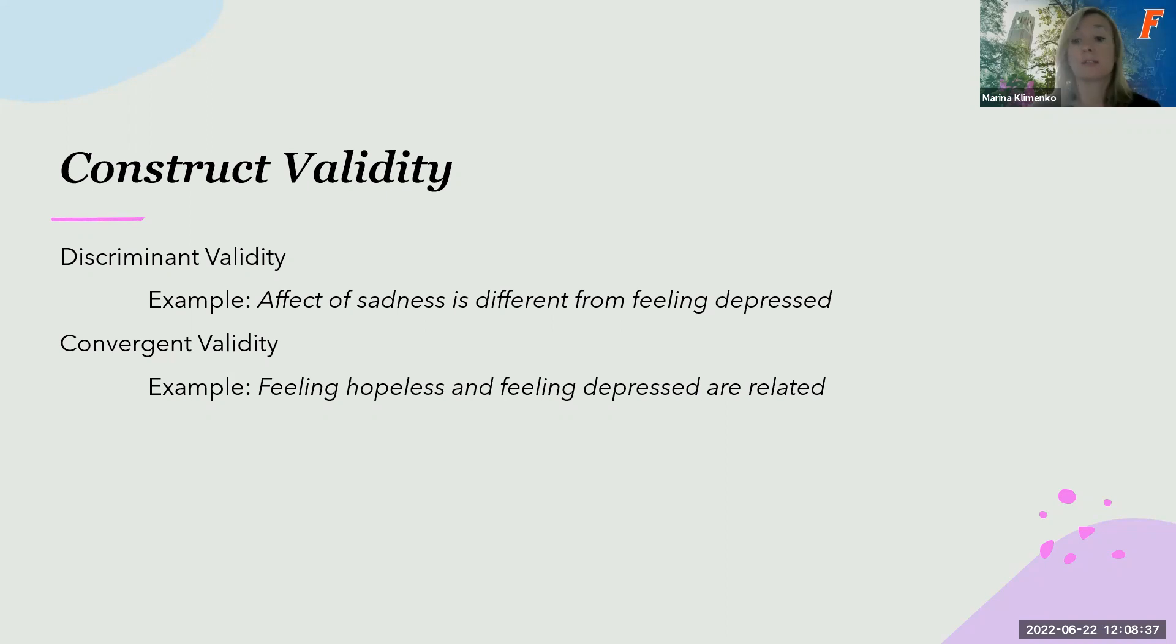Convergent validity is essentially the opposite of discriminant validity. Based on the theory, if you developed an instrument measuring hopelessness, to show its convergent validity, you might want to compare the scores obtained on the hopelessness test and the scores on depression of the same subjects. And their scores should be correlated because, based on the theory, depression tends to be related to feeling of hopelessness. You should expect to have a positive correlation between the two scores.